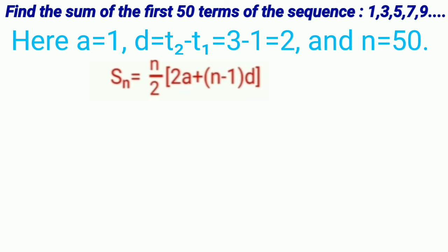S n formula: S n is equal to n by 2 into 2a plus n minus 1 into d.